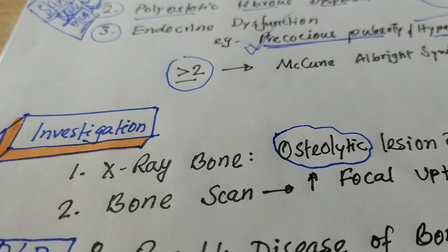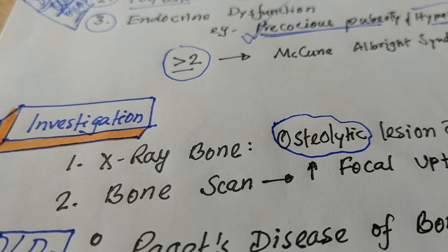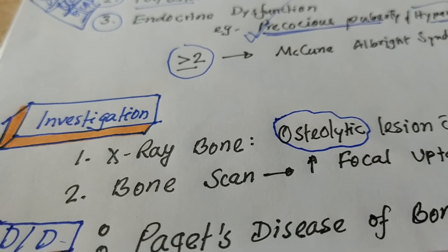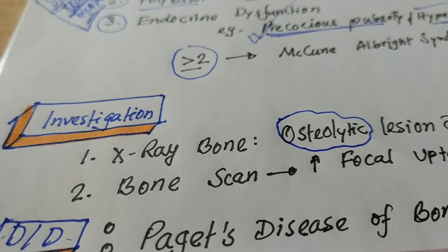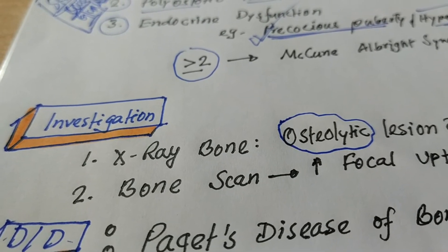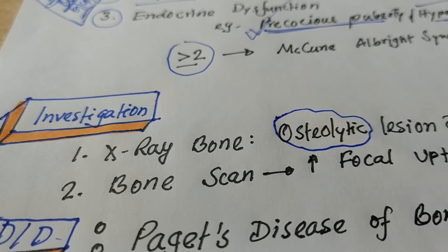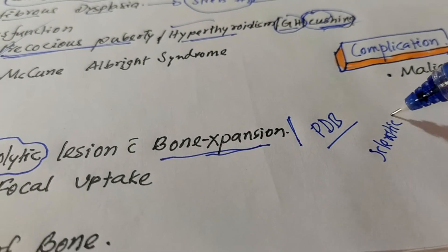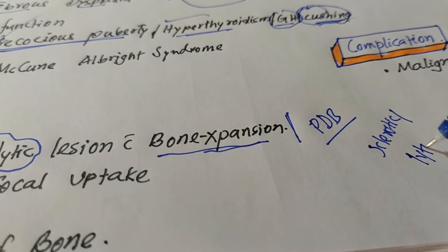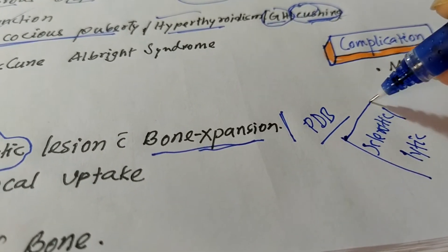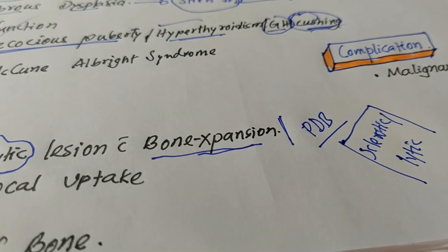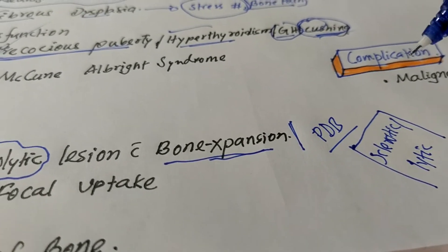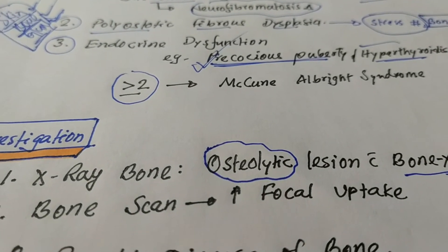It can be confused. Is it Paget disease of bone? Paget disease of bone? In Paget disease of bone, the X-ray finding should be alternating osteopenia and osteosclerotic lesion. Osteosclerotic lesion plus alternating lytic lesion. In Paget disease of bone, the X-ray finding is alternating sclerotic lesion and lytic lesion. And there, bony expansion may be present. So this is the X-ray finding of McCune-Albright syndrome.